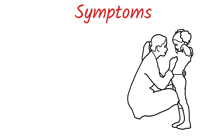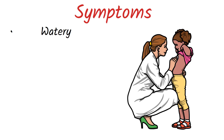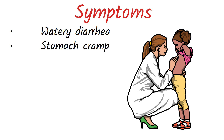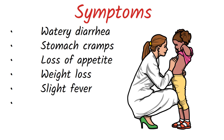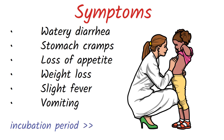The symptoms of crypto usually include watery diarrhea, stomach cramps, loss of appetite, weight loss, slight fever, and vomiting. Symptoms usually begin about 1 week after exposure to the parasite.